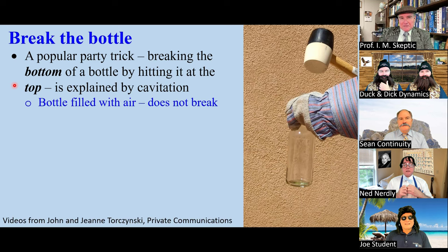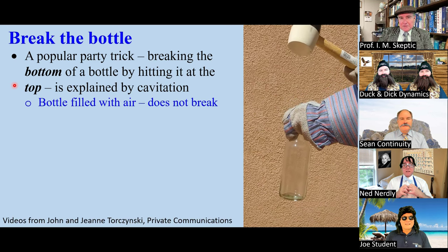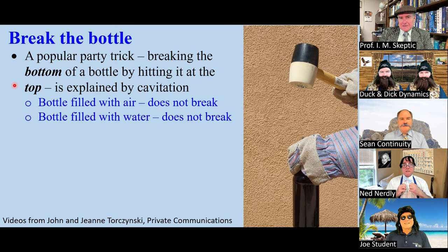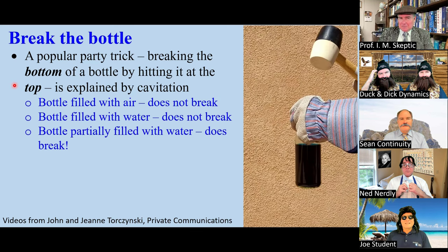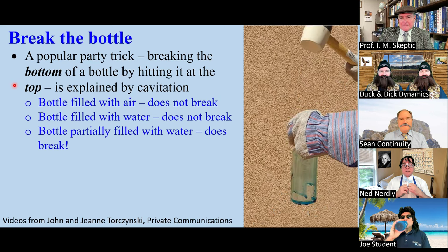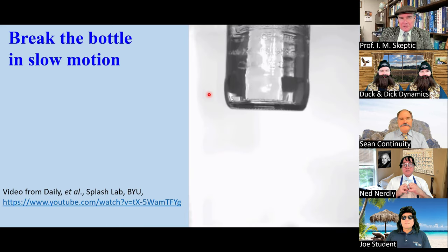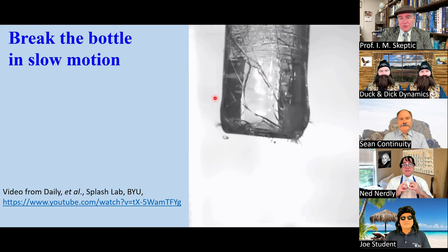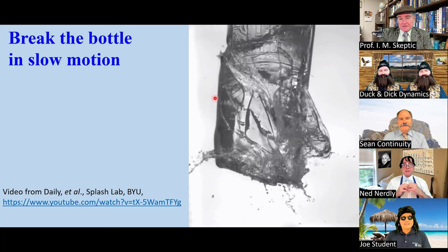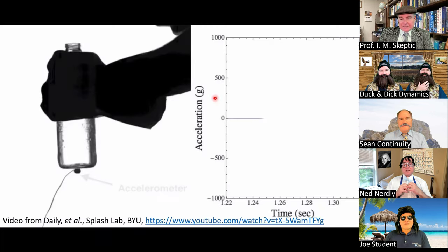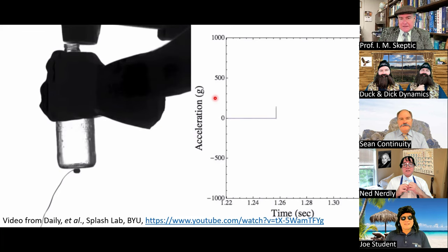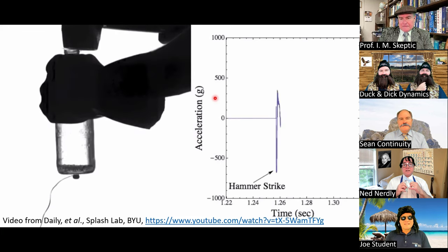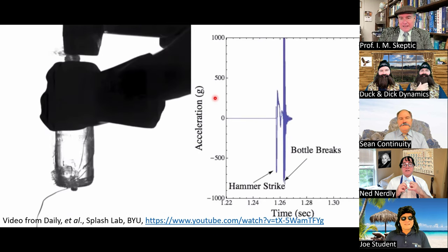Here's the party trick that was mentioned. If the bottle is filled with air, it doesn't break. If the bottle is filled with water, it doesn't break. But if the bottle is partially filled with water, it breaks. Here's some slow motion videography — you can see the cavitation bubbles form, collapse, and break the bottle. If you put an accelerometer on the bottle, you see that it doesn't break when the hammer strikes, but it does break when the cavitation collapses.